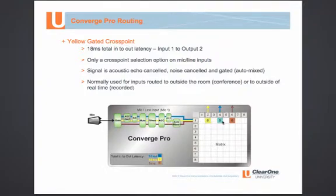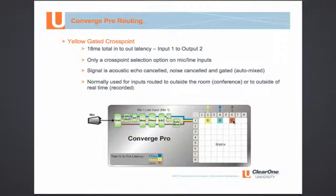The mic can still be routed using blue and brown cross points to other destinations using other outputs, but we do need a yellow cross point anytime we route the mic outside of the room or outside of real time. This is in contrast to the brown cross point, which was inside the room in real time — it skips the noise canceller, it skips the acoustic echo canceller and nonlinear processor, and the brown cross point also skipped the automatic level control. Thanks so much. Good programming.